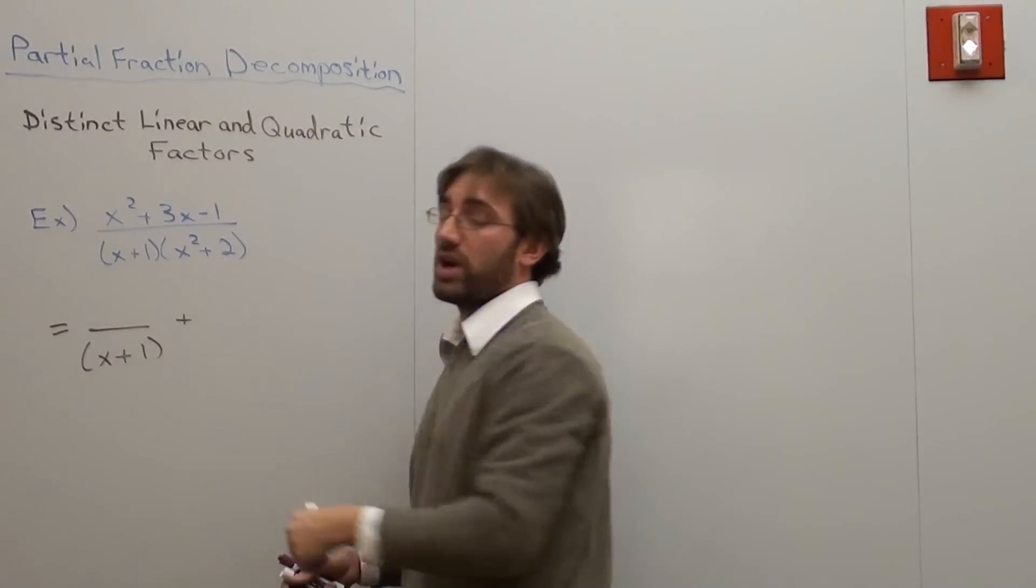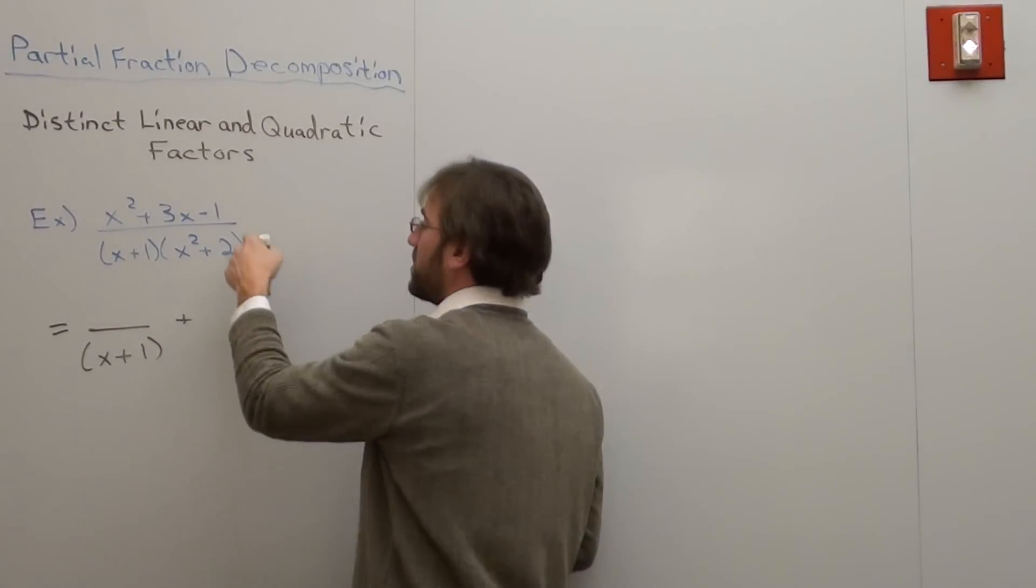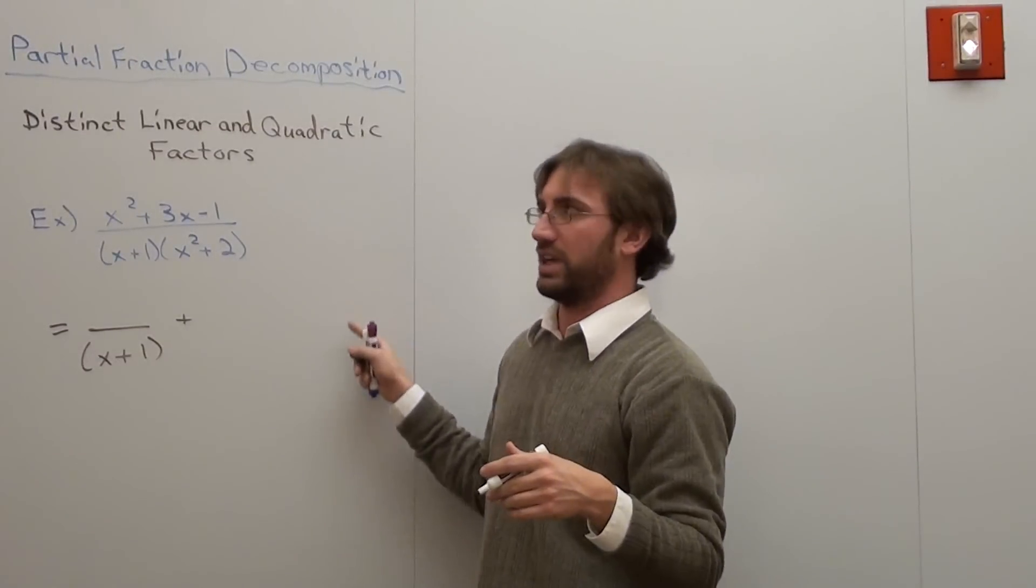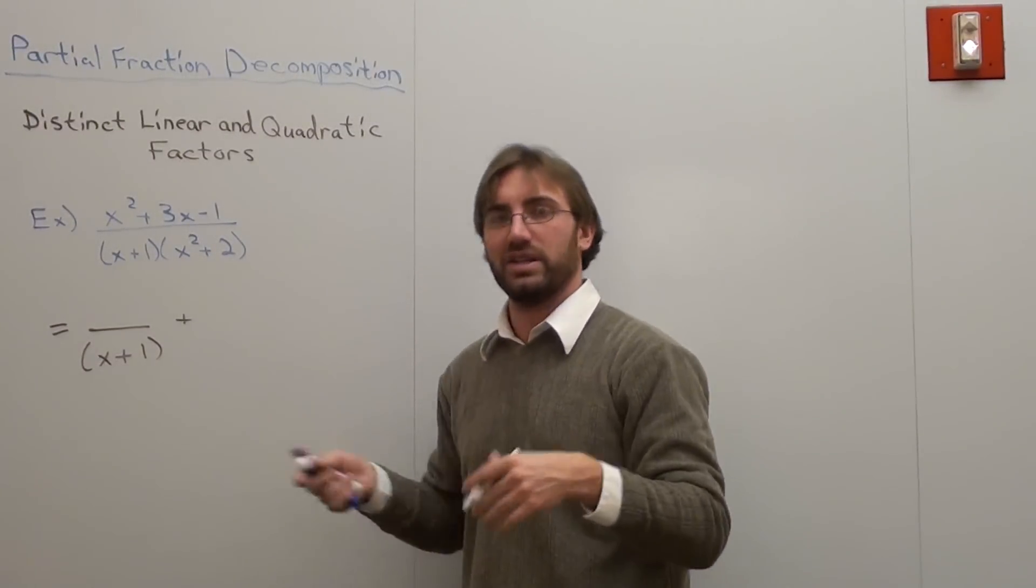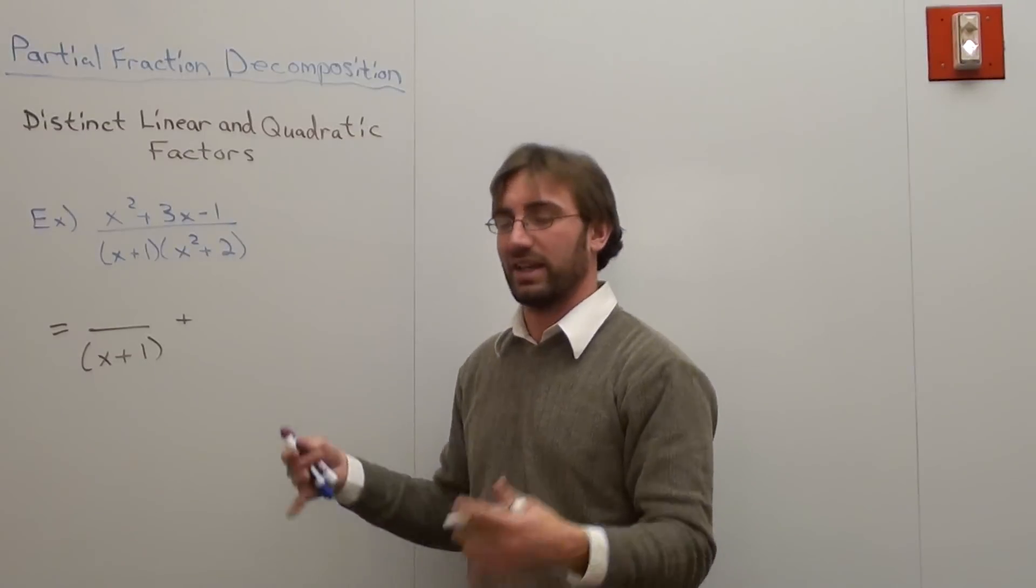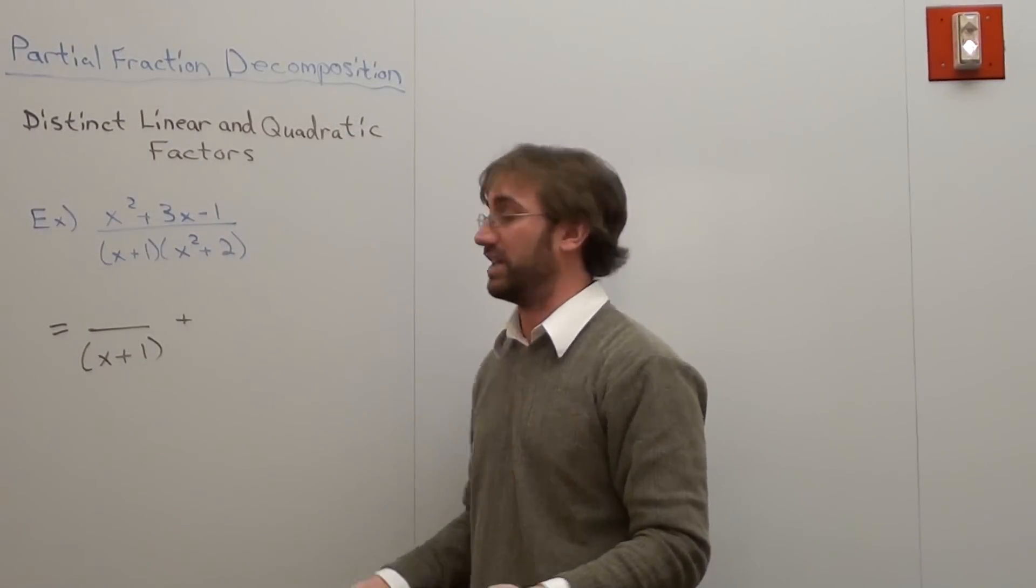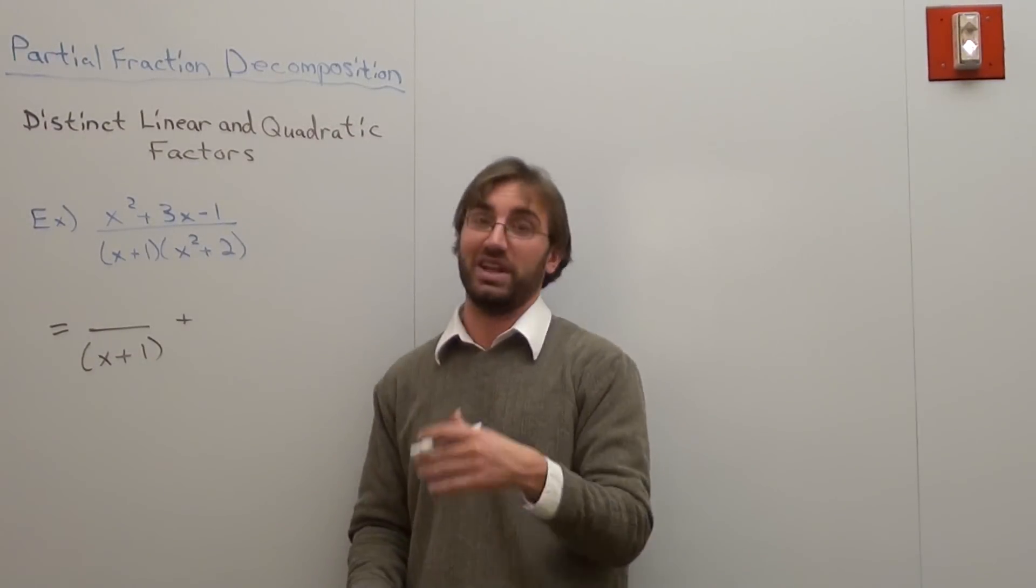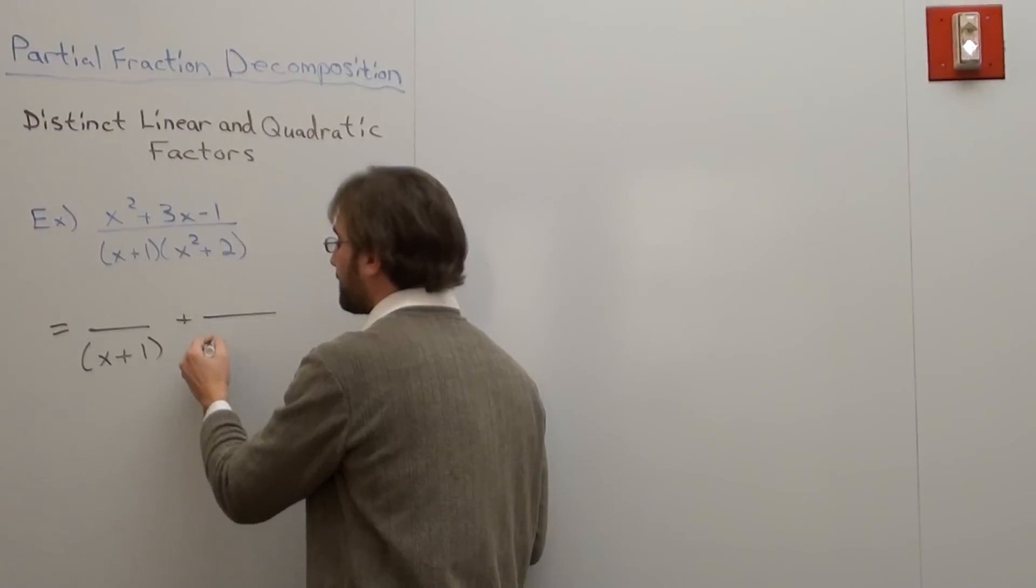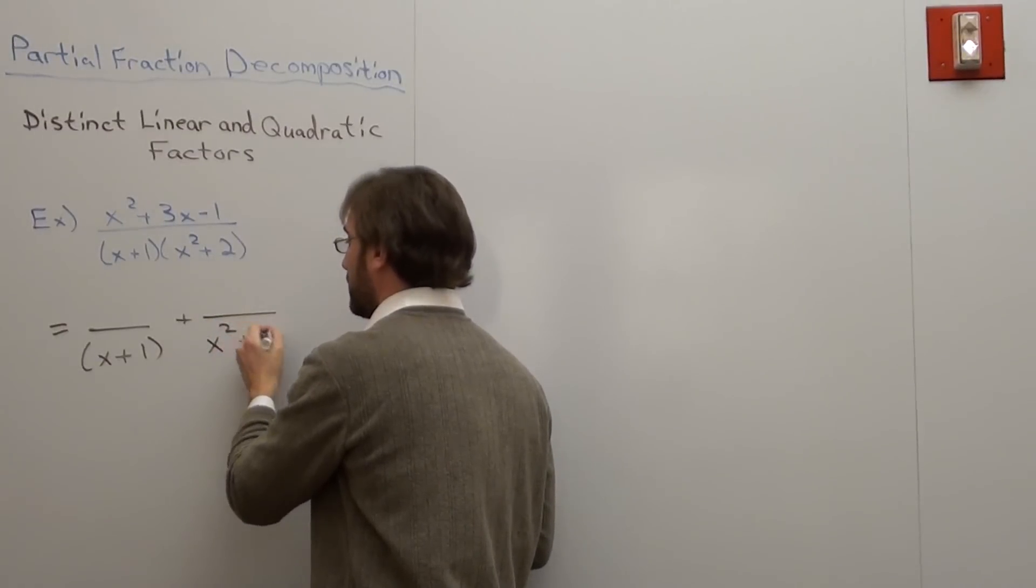This is a quadratic factor, so it's different. If it was x squared plus 2 quantity squared, you have to write x squared plus 2 in quantity, then plus x squared plus 2 squared. Same thing with the linear, but we're not going to do that because I'm not going to make it that difficult because I can't finish that in 15 minutes explaining.